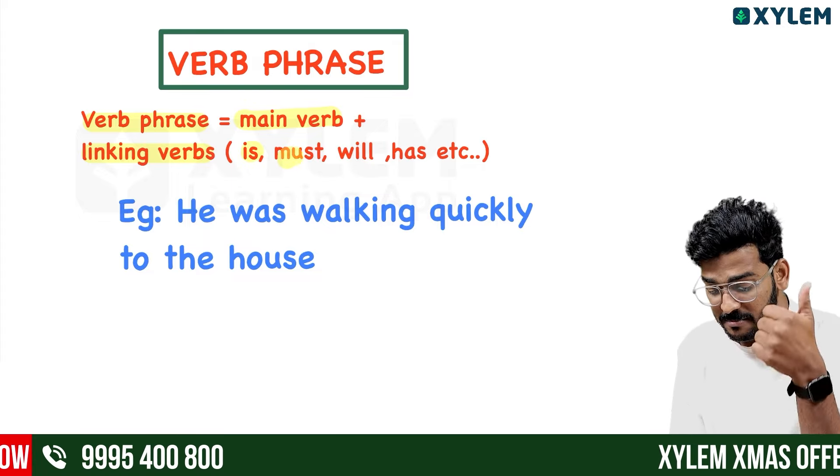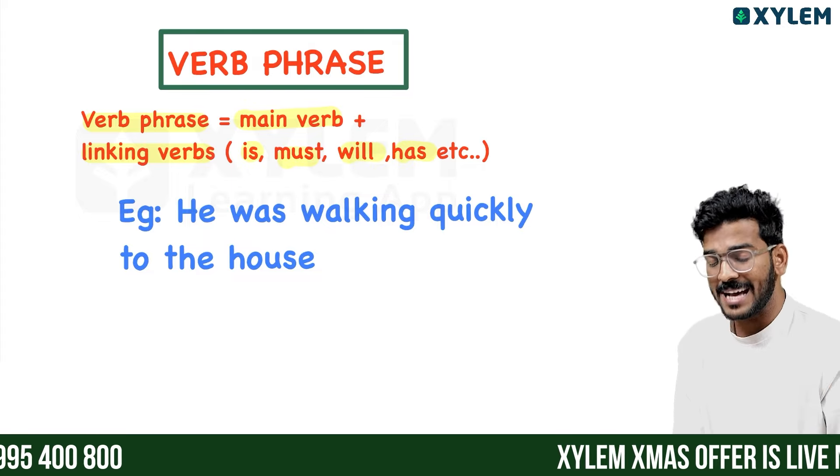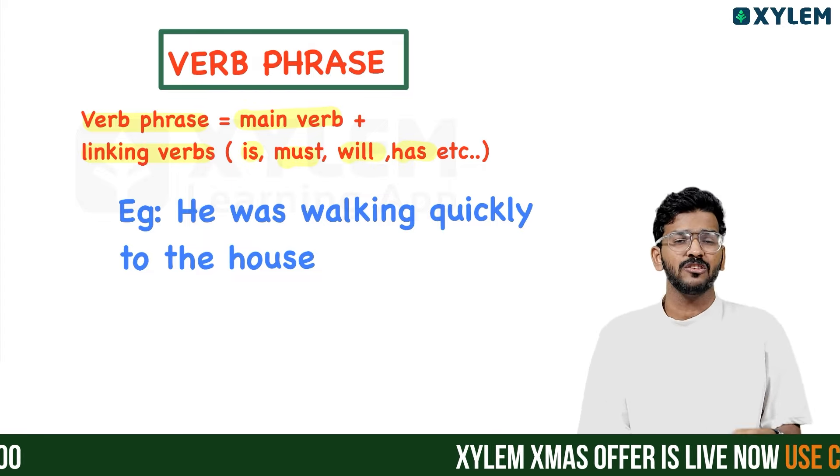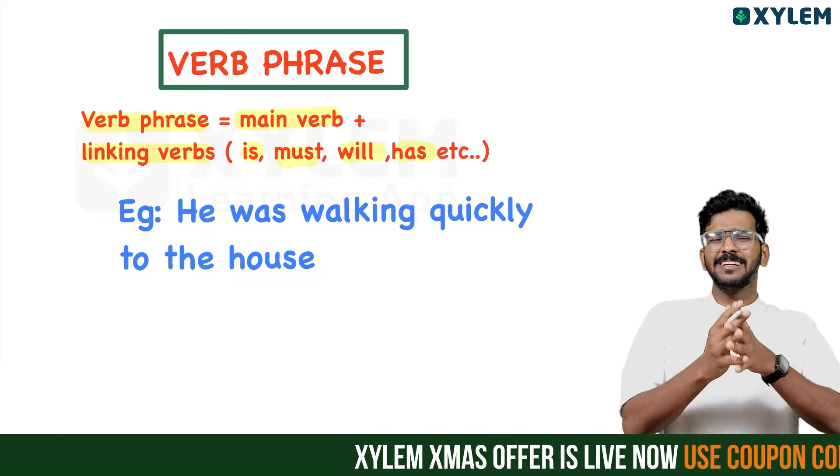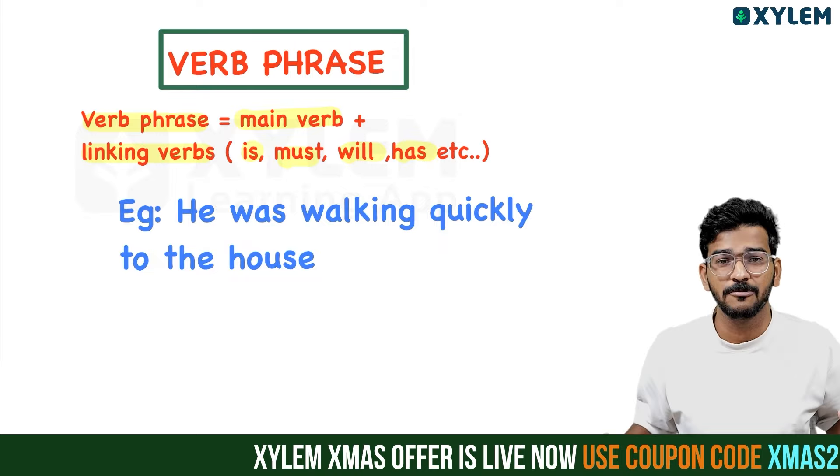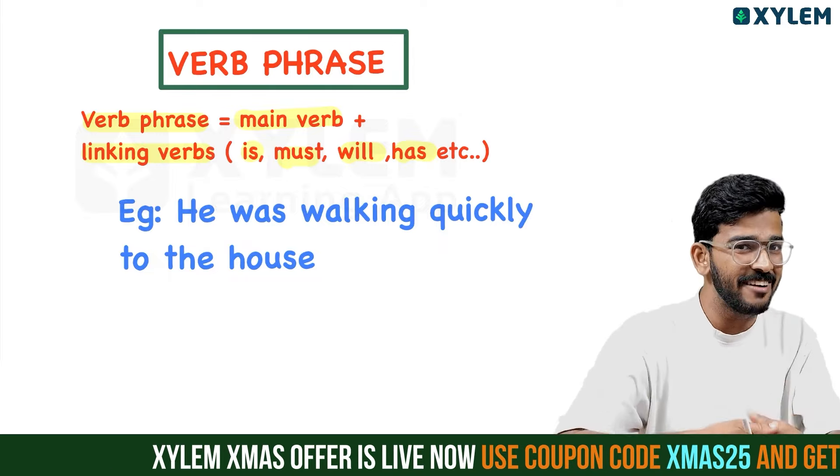The auxiliary verbs include: is, must, will, has, have, had — these are complete auxiliary verbs that are also called linking verbs.